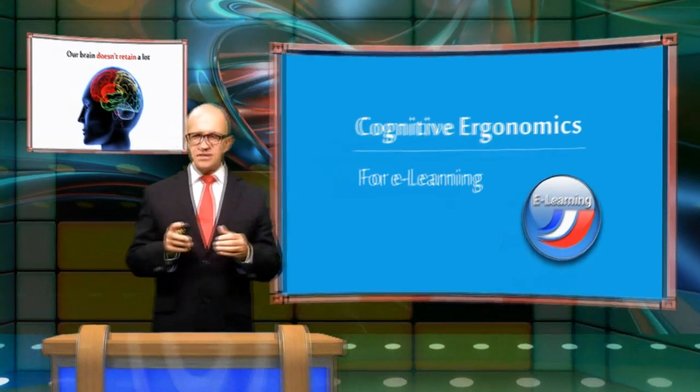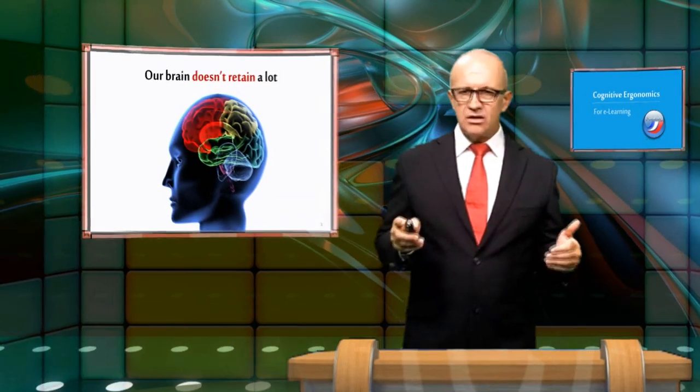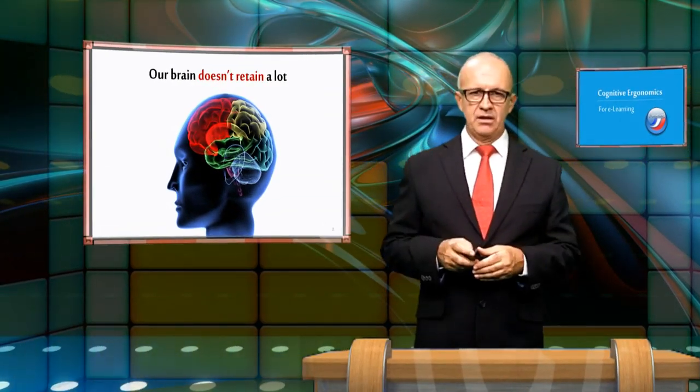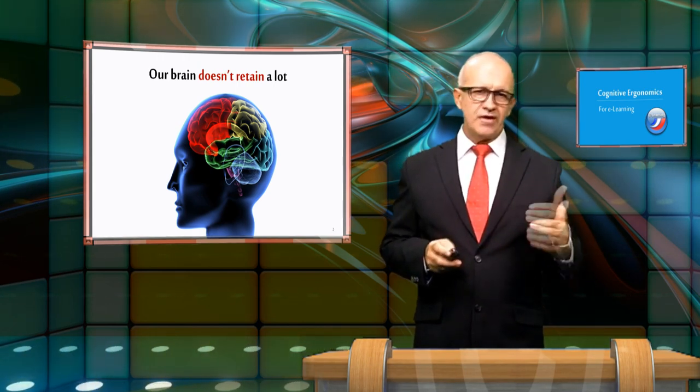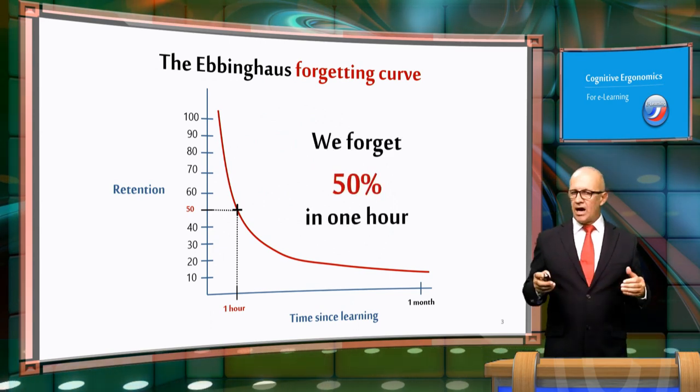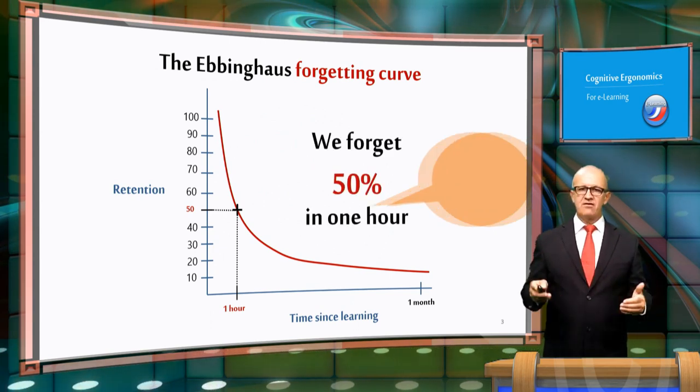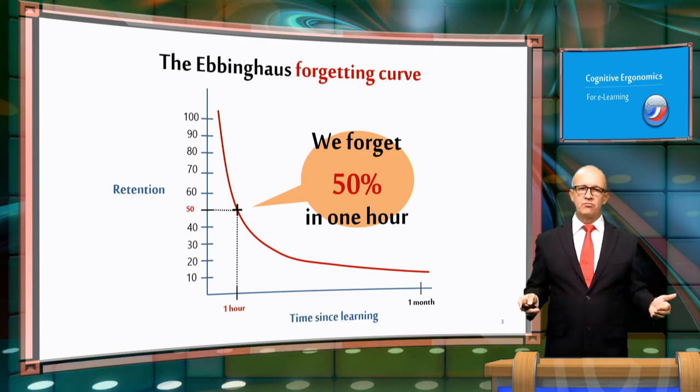The first thing to remember is that our brain doesn't retain a lot of information. The Ebbinghaus forgetting curve shows that we forget 50% in one hour unless we practice. Our retention rate is therefore quite low and I will describe a few ways we can improve it.